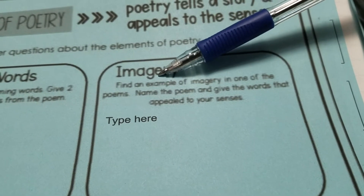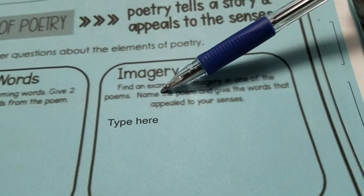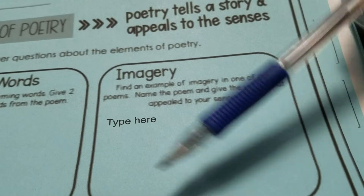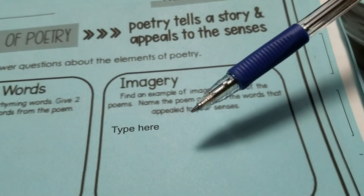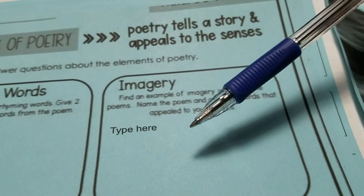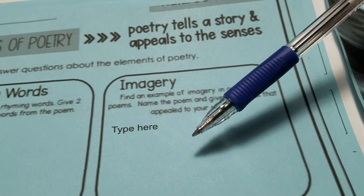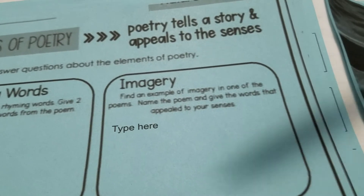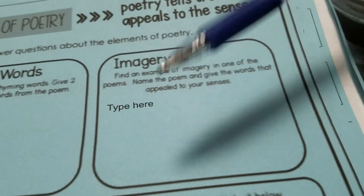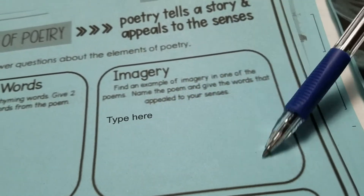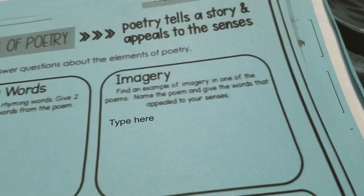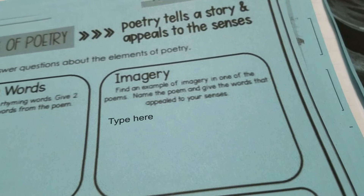Find an example of imagery. Name the poem and give me about three to five words that gave you that picture in your brain, what really stuck with you. I'm not going to require a full sentence here — just give me the poem and then the line that contained the piece of imagery that stuck with you.